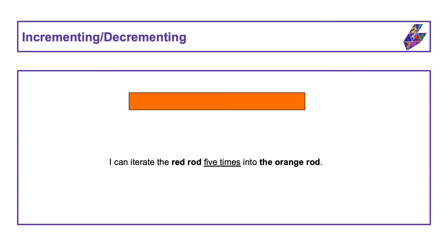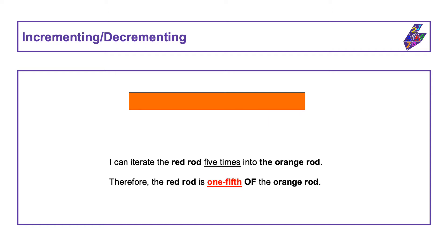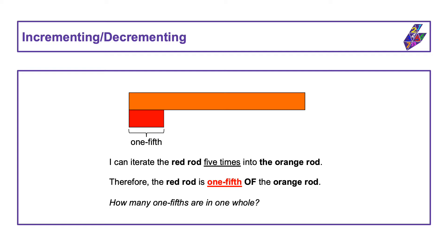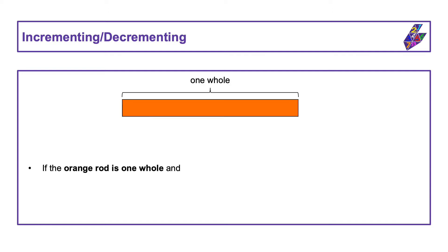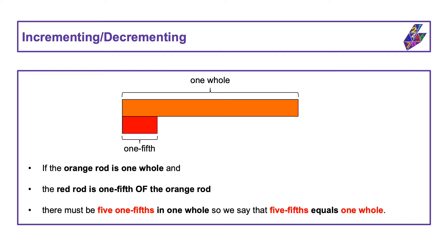I can iterate the red rod five times into the orange rod: one, two, three, four, five. Therefore the red rod is one-fifth of the orange rod. How many fifths are in one whole? If the orange rod is one whole and the red rod is one-fifth of the orange rod, there must be five one-fifths in one whole. So we say that five-fifths equals one whole.